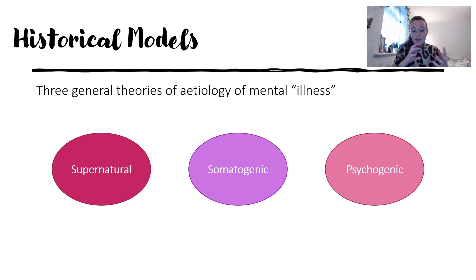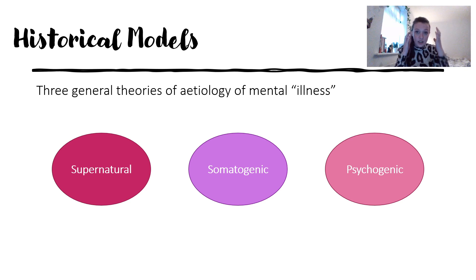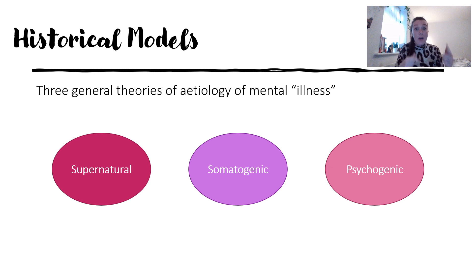Coming to the 18th through 20th centuries, psychogenic and somatogenic theories came back to the fore. The dominant models during this period conflicted between somatogenic — whether illness is in the body — and psychogenic — whether it's in the mind. What's important here is understanding how our framework around mental illness was built in terms of services in the UK.